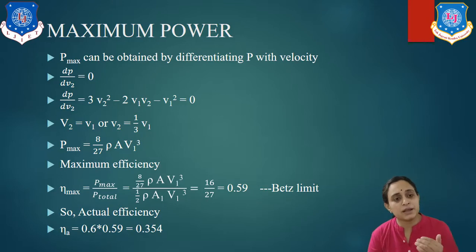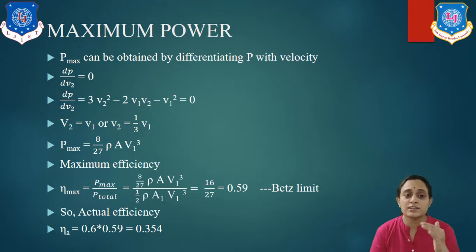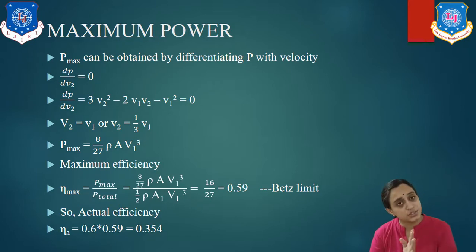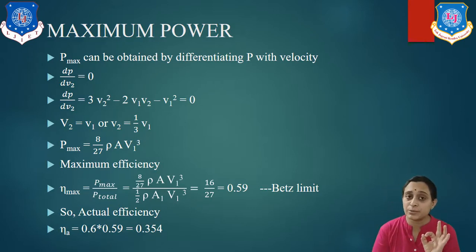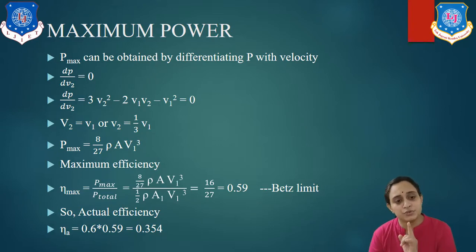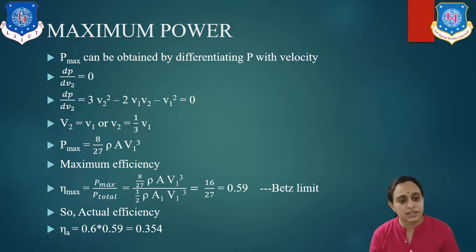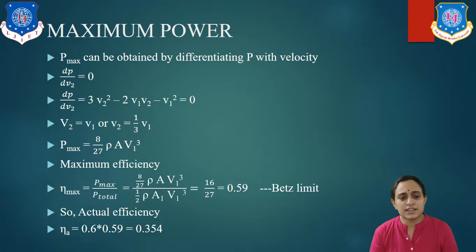Maximum efficiency η_max equals P_max divided by P_total: η_max = (8/27 ρAV1³) / (½ρAV1³) = 16/27 = 0.59. Students, remember this equation — it is very helpful in theories and numericals. The maximum efficiency is 16/27 or 0.59. The actual efficiency should be between 50 to 70 percent, so η_actual ≈ 0.6 × 0.59 ≈ 0.354, meaning approximately 35 percent. This is our theory of wind energy.